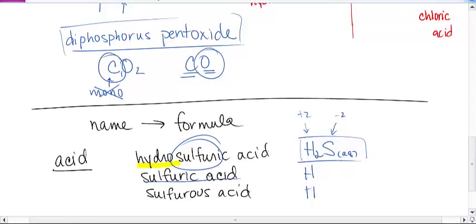Sulfuric acid, oh, there's no hydro, so there must be an oxygen. It ends in -ic, so that means it must come from sulfate. Sulfate is SO4 two minus. Hydrogen is plus one, so I need two of these guys. So it becomes H2SO4AQ.